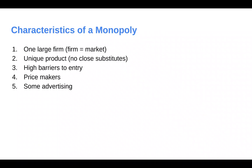They sell a unique product that has no close substitutes, high barriers to entry, so it's very difficult to get into this type of a market. They are price makers, so they get to set their own price, and they do do some advertising to convince people to buy their product. Google is a great example of a Monopoly. Even though there are other search engines like Bing or DuckDuckGo, the vast majority of people use Google.